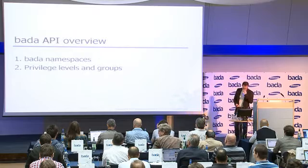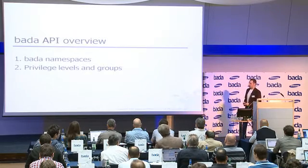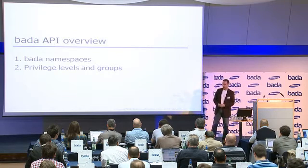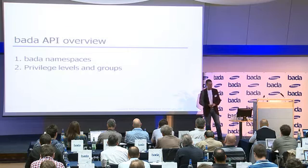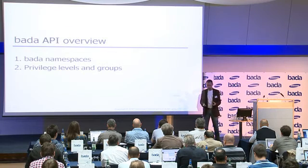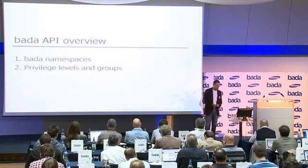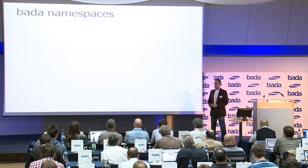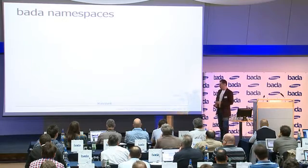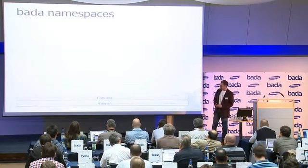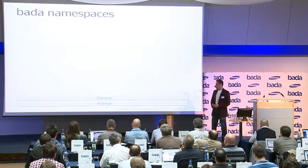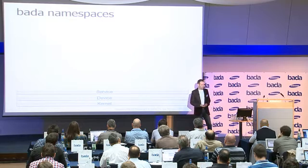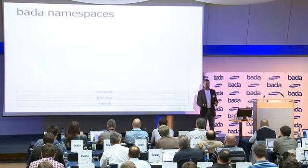Let's start with the first part: the Bada API. Once you've downloaded our libraries in the form of the SDK and our IDE — our development environment, which is an Eclipse-based IDE as Phil already mentioned — you get access to the full Bada API. The Bada architecture is subdivided into four layers: at the bottom we have the kernel layer, on top of that the device layer, then the service layer, and the fourth top layer is what we call the framework layer — in other words, our API.